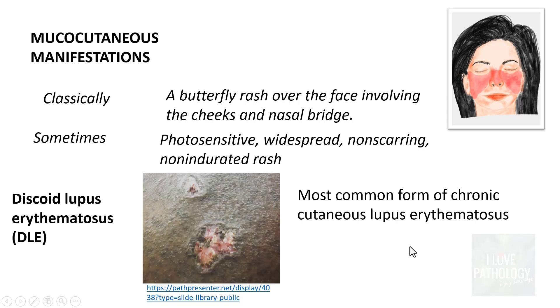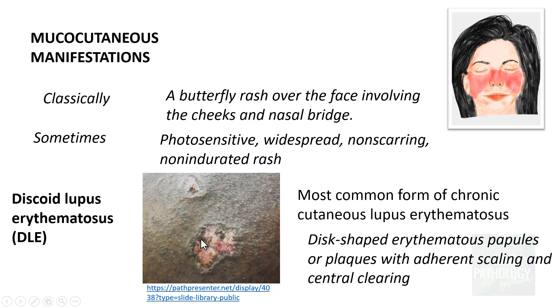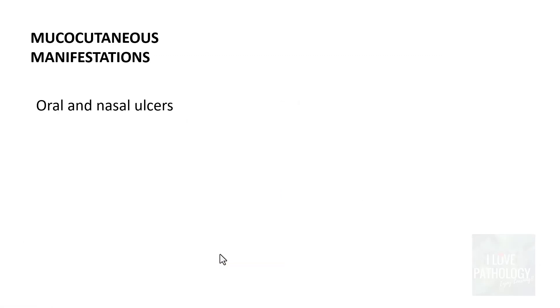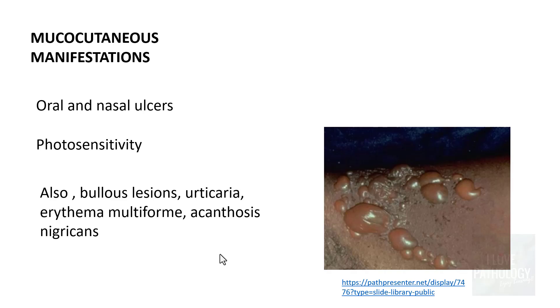The most common form of cutaneous lupus erythematosus is discoid lupus erythematosus, where the lesions are disc-shaped, erythematous papules or plaques with scaling and central clearing. Patients can also have oral and nasal ulcers, photosensitivity, and sometimes bullous lesions. They can also manifest with features of urticaria, erythema multiforme, and acanthosis nigricans.